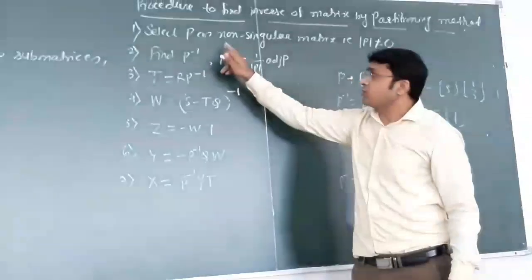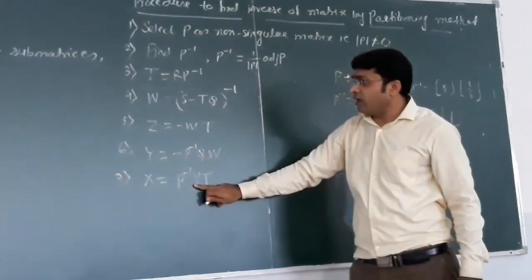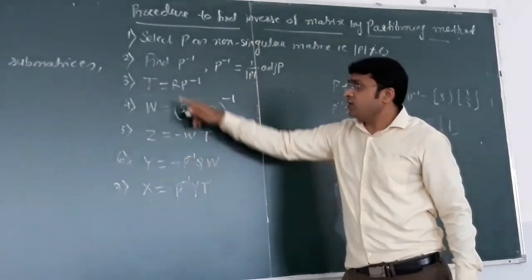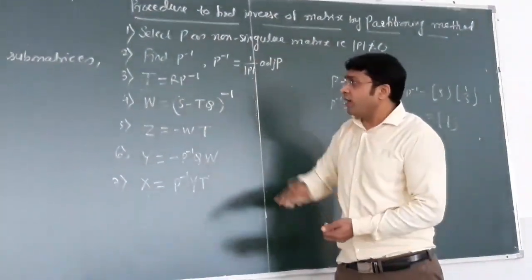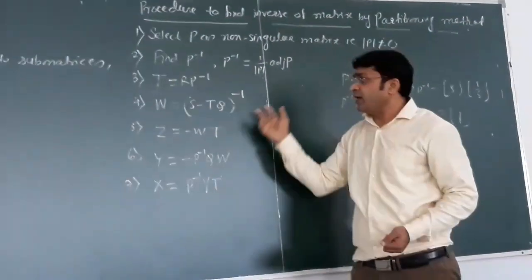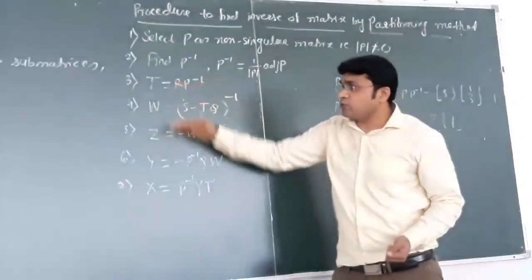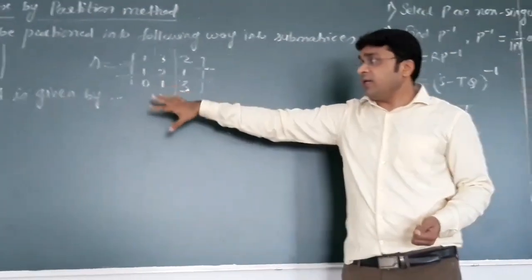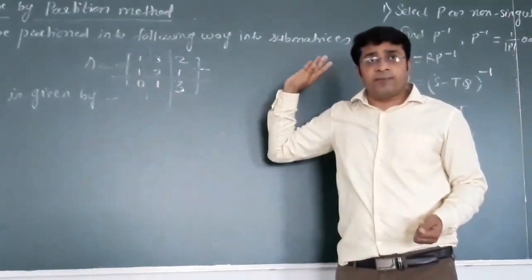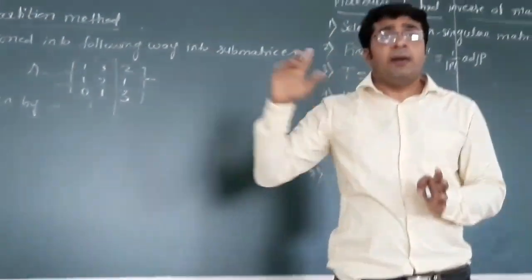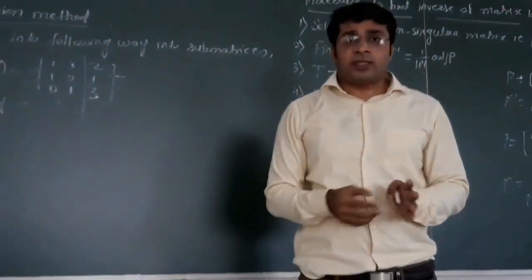After that, X will be equals to P inverse minus YT. We are using P inverse two times here. We have to find out all these matrices by using multiplication and finding the inverse, and putting these values again, arranging into that square matrix. We will have the inverse of a matrix. We are just having a set of formulas to find out the inverse by partitioning method.